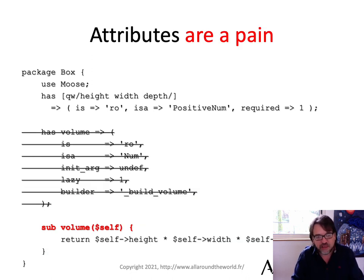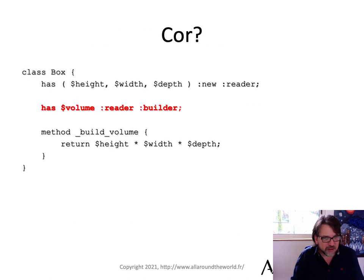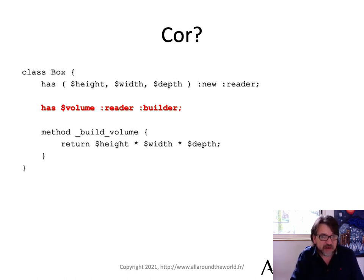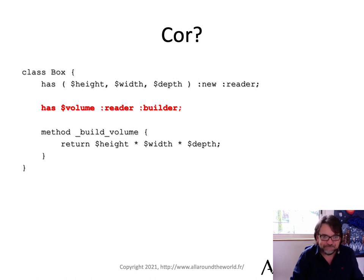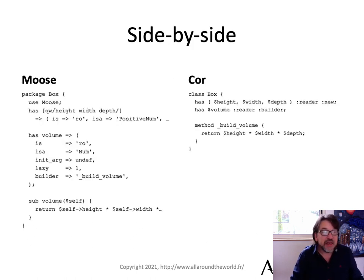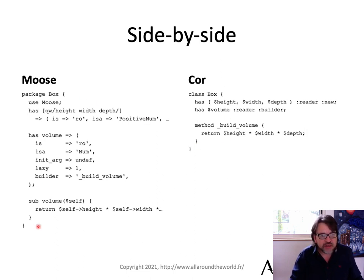How do you do this in Cor? In Cor, for volume I've got a reader and a builder. Because I don't have 'new', I cannot pass it to the constructor. Here's my reader, here's my builder, I just return height times width times depth, and it gets stored in volume. Looking at them side by side, you can see how Cor does the same thing as Moose — much shorter, much easier.